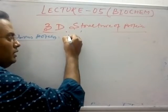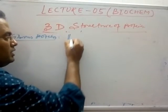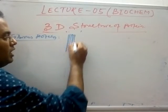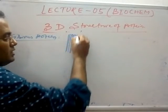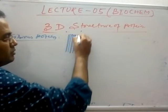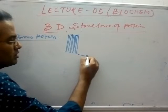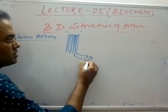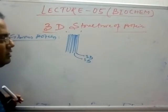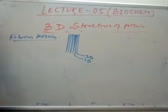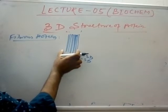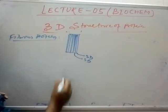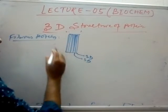Fibrous proteins arrange themselves in a linear form, and each linear structure is a 3D structure. These 3D structures interact with themselves to form a complex thick structure. This thick structure provides rigidity.